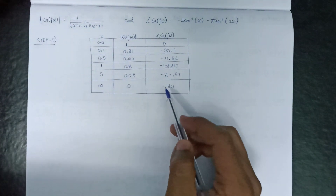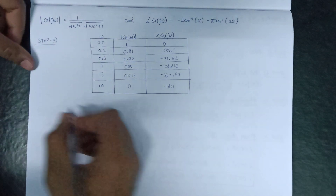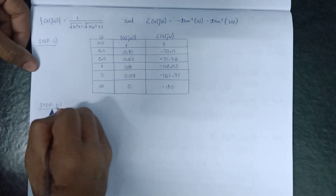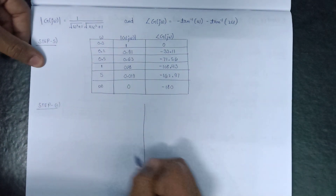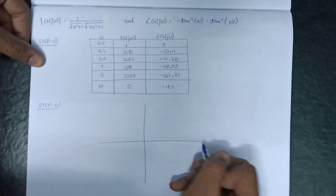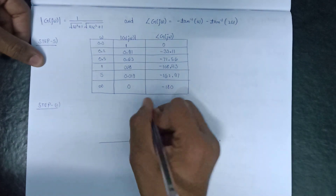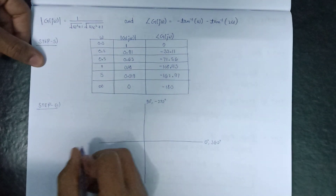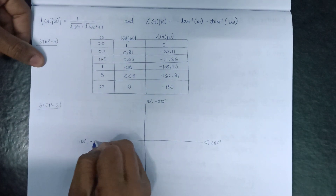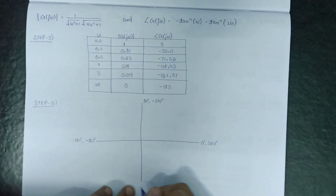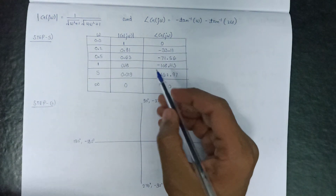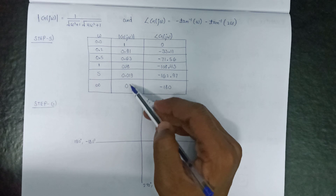These are all the values obtained after calculation. Moving on to the last and final step, that is plotting of the polar plot. This is our polar plot axes: 0°, 360°, 90° or −270°, 180° or −180°, and 270° or −90°.